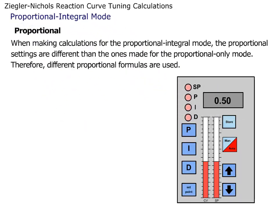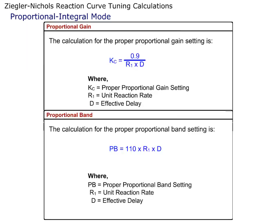When making calculations for the Proportional Integral mode, the Proportional settings are different than the ones made for the Proportional Only mode. Therefore, different proportional formulas are used. These are the formulas for Proportional Gain and Proportional Band when in the Proportional Integral mode.